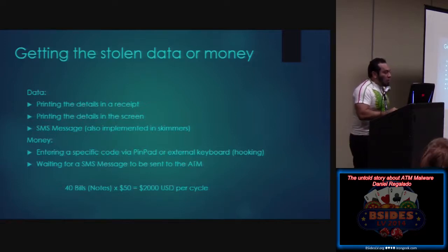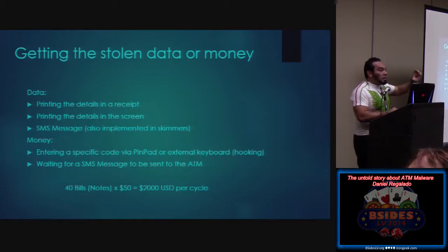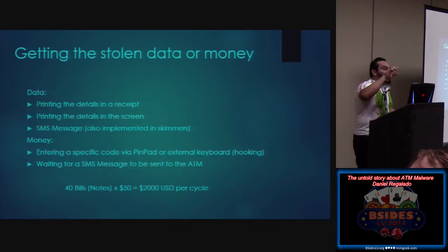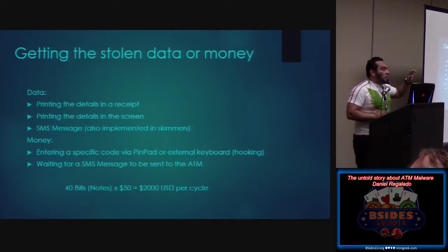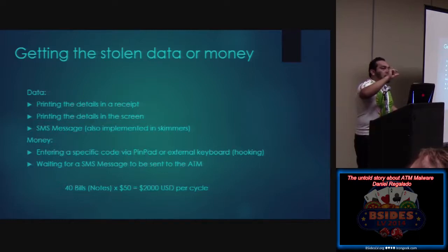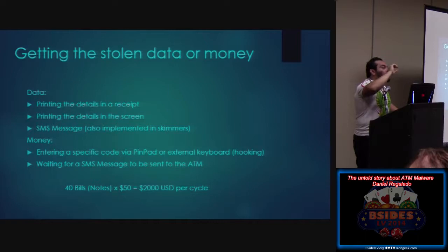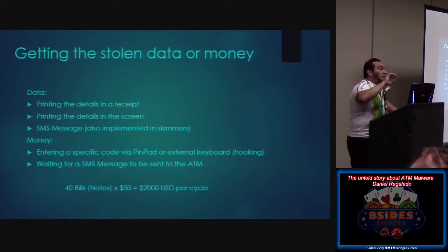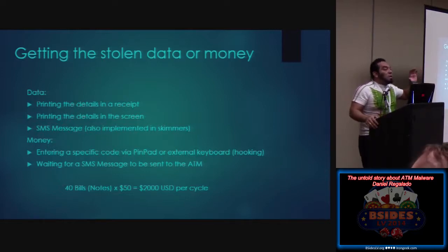How do they store or exfiltrate data? They can print it on the receipt, display it on the screen, or send it via SMS message — just like a skimmer, as soon as you enter something it's sent to the attackers. How do they get the money? They enter a specific combination on the PIN pad, external keyboard, or via SMS to trigger dispensing. Every ATM — depending on the vendor — has two types: one with a small door in the dispenser that opens just a little, allowing 40 bills only. If they're using cassette 4 with $50 denomination and get 40 bills, that's $2,000 per cycle.